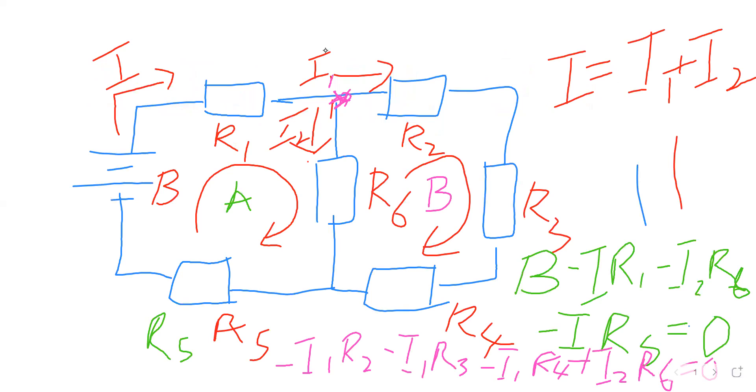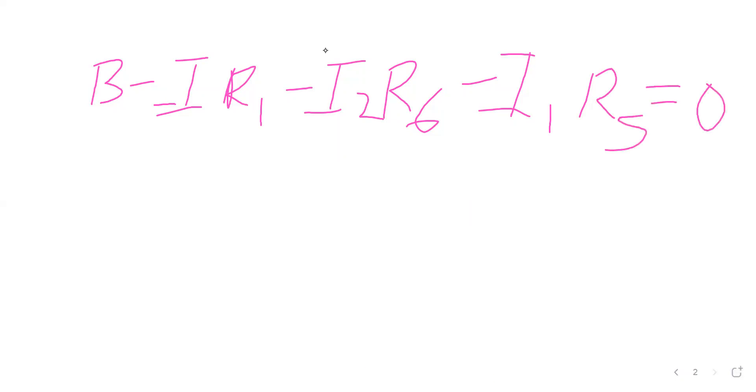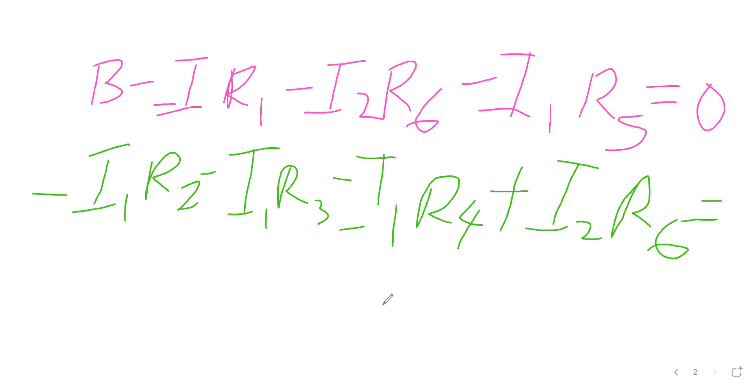Second equation: minus I1 R2 minus I1 R3 minus I1 R4 plus I2 R6 equal to zero.